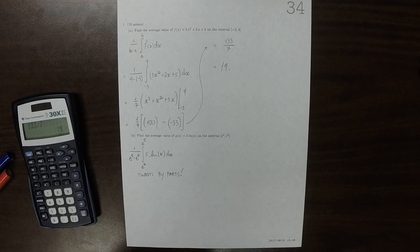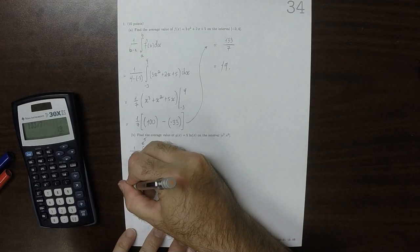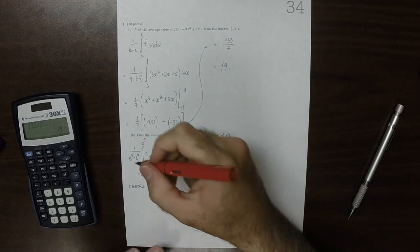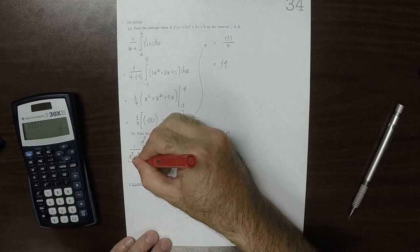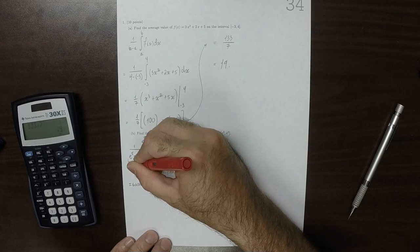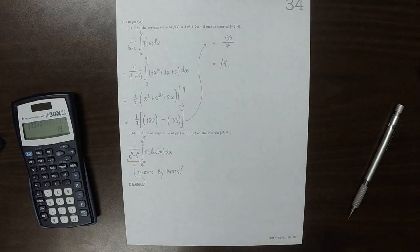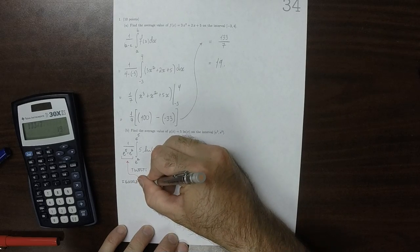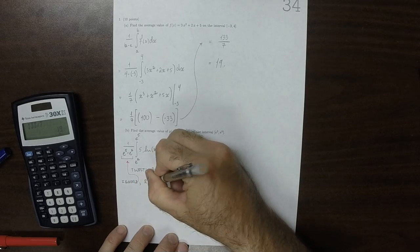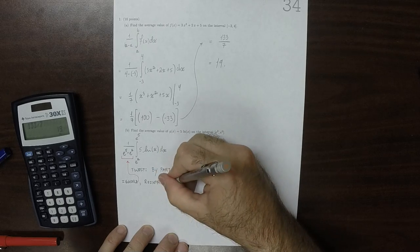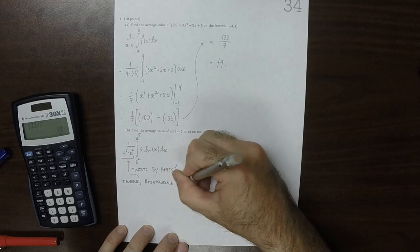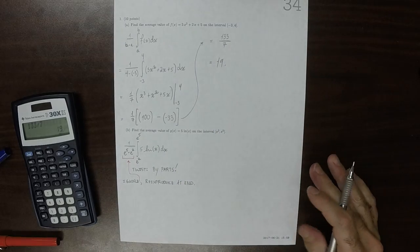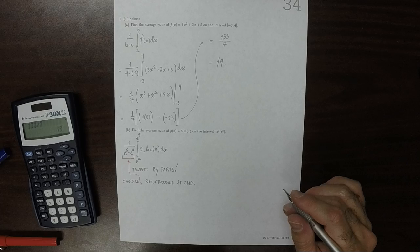So I'm going to ignore this constant multiple out front. And I'm going to reintroduce it at the end. Because otherwise, I'd have to write it a whole bunch of times.